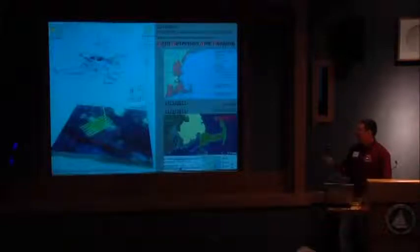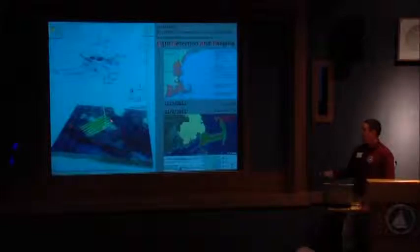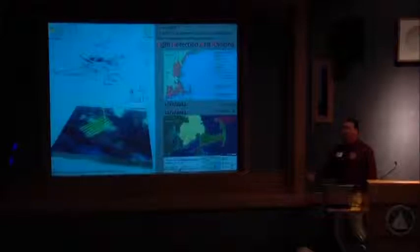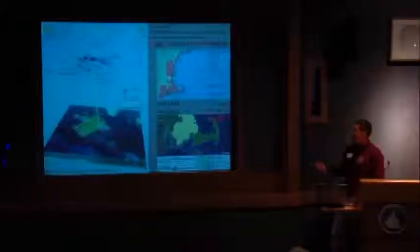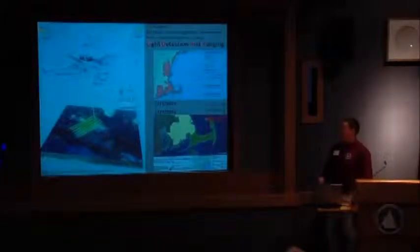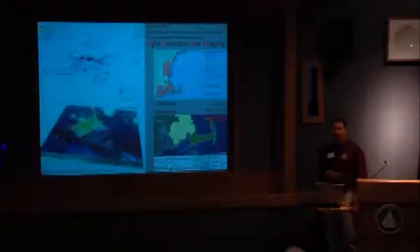Coastal LIDAR is a light beam shot from an aircraft down onto the surface of the earth, painting back and forth to get about 100% coverage. It measures the time difference between the light going down and bouncing back up to get the distance and elevation. This is possible due to advances in technology: very accurate GPS, real-time kinematic GPS, and very accurate pitch, roll, and heading on the aircraft.